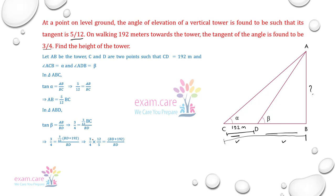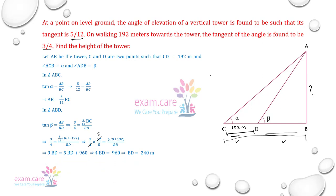अब 5 by 12 side change होगा तो 12 by 5 हो जाएगा। Cross multiply करने पर — 4 cancel होके 3 times में आता है, 3 into 3 = 9, तो 9 BD is equal to 5 BD plus 960। Side change होने पर 9 BD minus 5 BD = 960, तो 4 BD is equal to 960, और BD is equal to 240 meter।